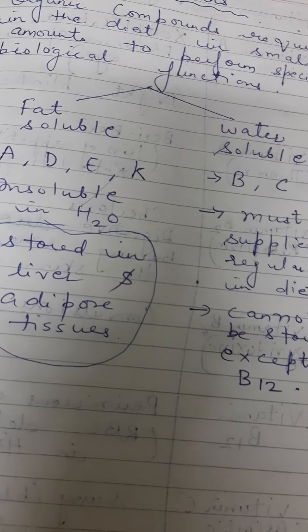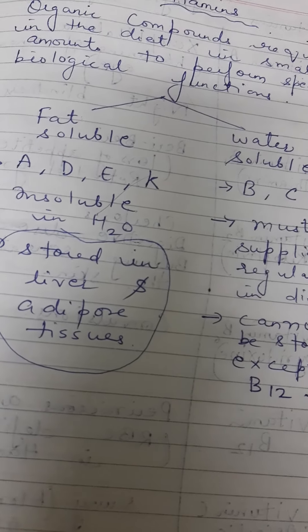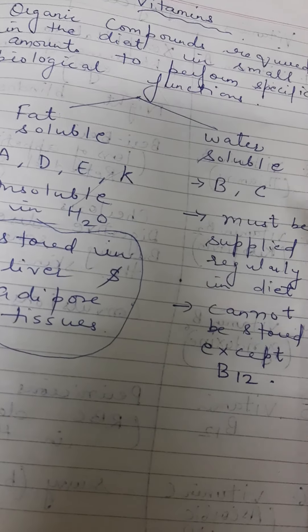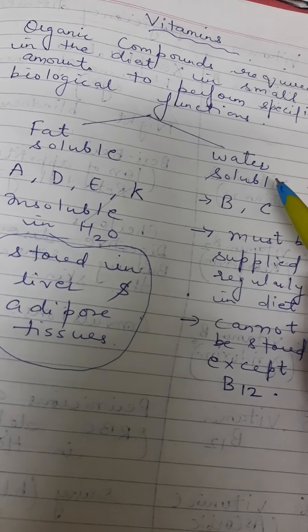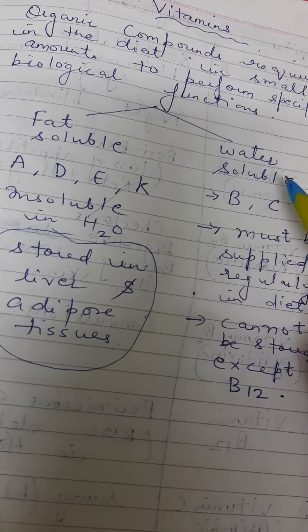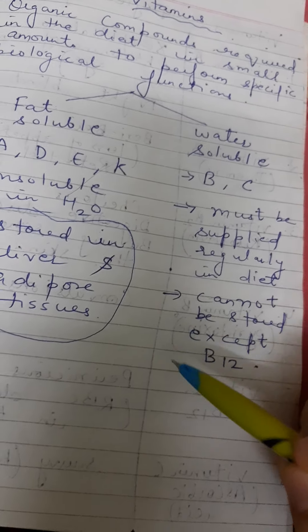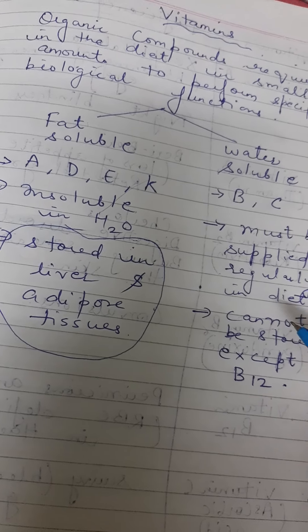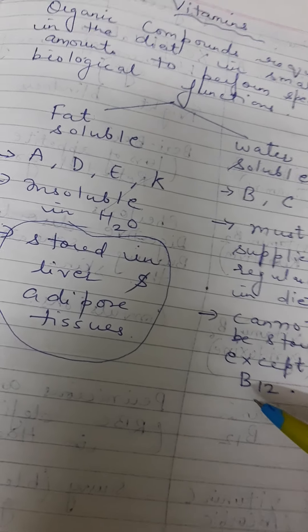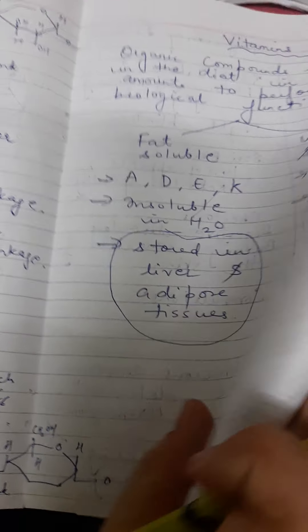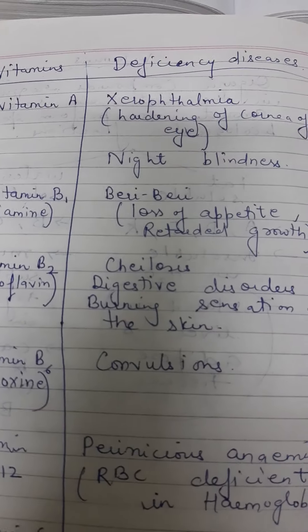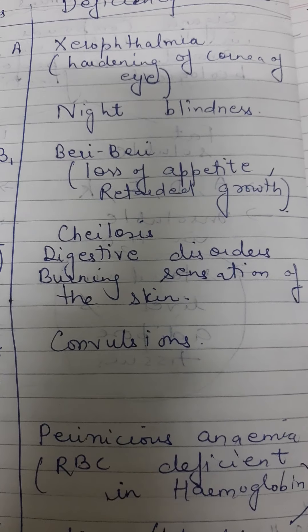This is an important MCQ point — fat-soluble vitamins are stored in liver and adipose tissues. Water-soluble vitamins must be continuously and regularly supplied in the diet because they get excreted out in urine and cannot be stored. An exception to note is vitamin B12, which is a water-soluble vitamin that can be stored.